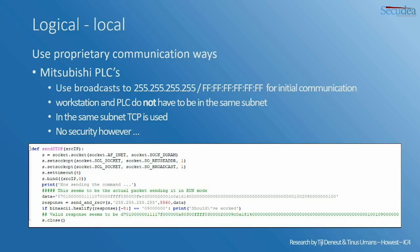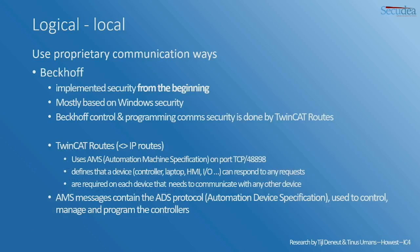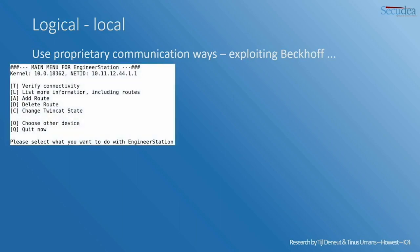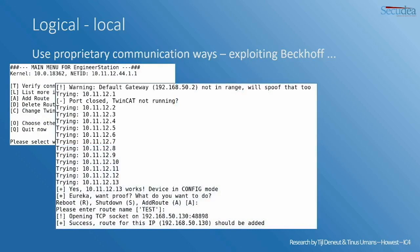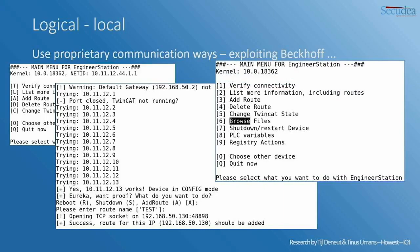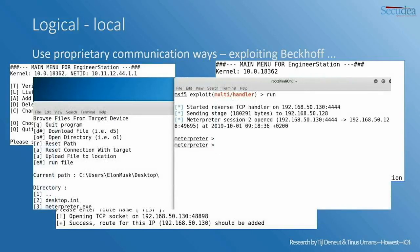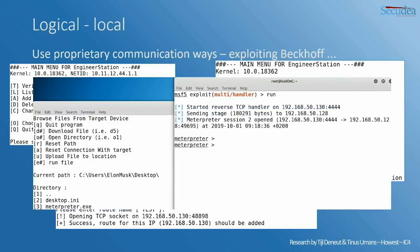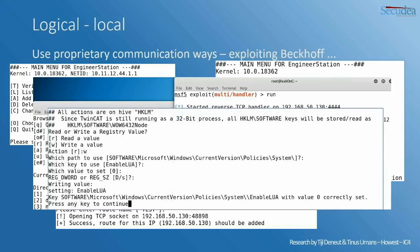On proprietary communication in the Beckhoff style: they do implement security, but it's based on TwinCAT routes and you can play around with those routes. I'll just show screenshots Tinus created to exploit Beckhoff systems. Verifying communication, connectivity to the device, add route, delete route — he found a system and could choose: reboot, shutdown, or add routes. If he got access to the engineering station, he could verify communication, browse files, upload files — upload something like Meterpreter, because Beckhoff is actually a Windows system — and get a nice Meterpreter shell. You can browse and change the registry, all on a fully patched Windows system, accessed through engineering software.